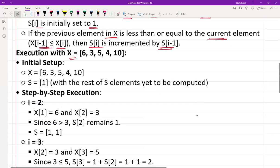Initial setup is going to be like this: S = [1] with the rest of S elements yet to be computed. Step-by-step execution: i equal to 2, X[1] equal to 6 and X[2] equal to 3. Since 6 is greater than 3, S[2] remains 1, so S = [1, 1].